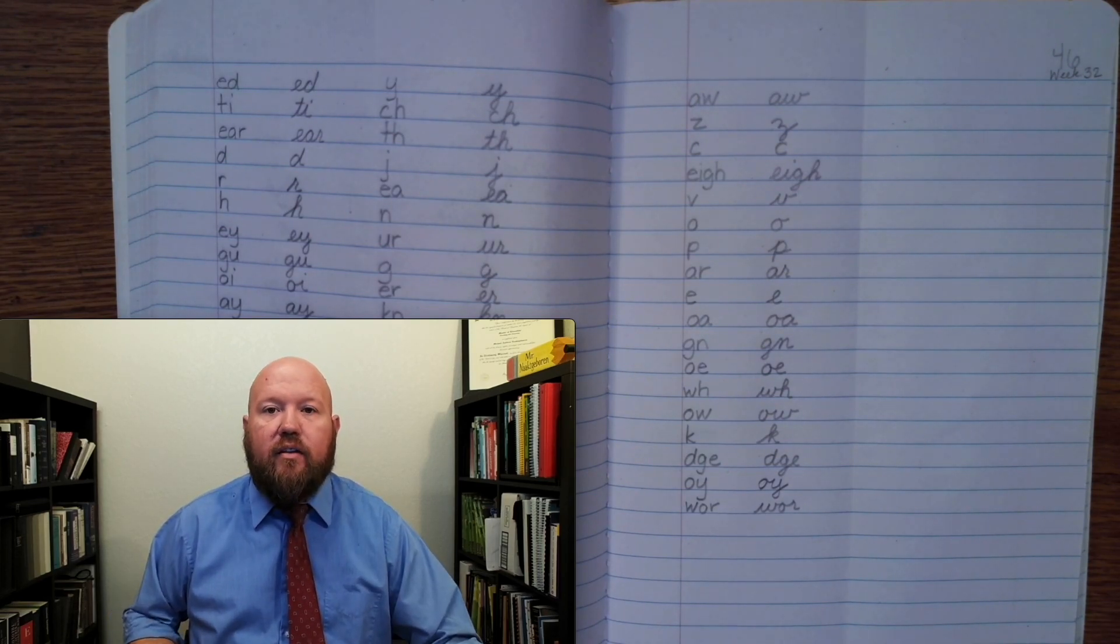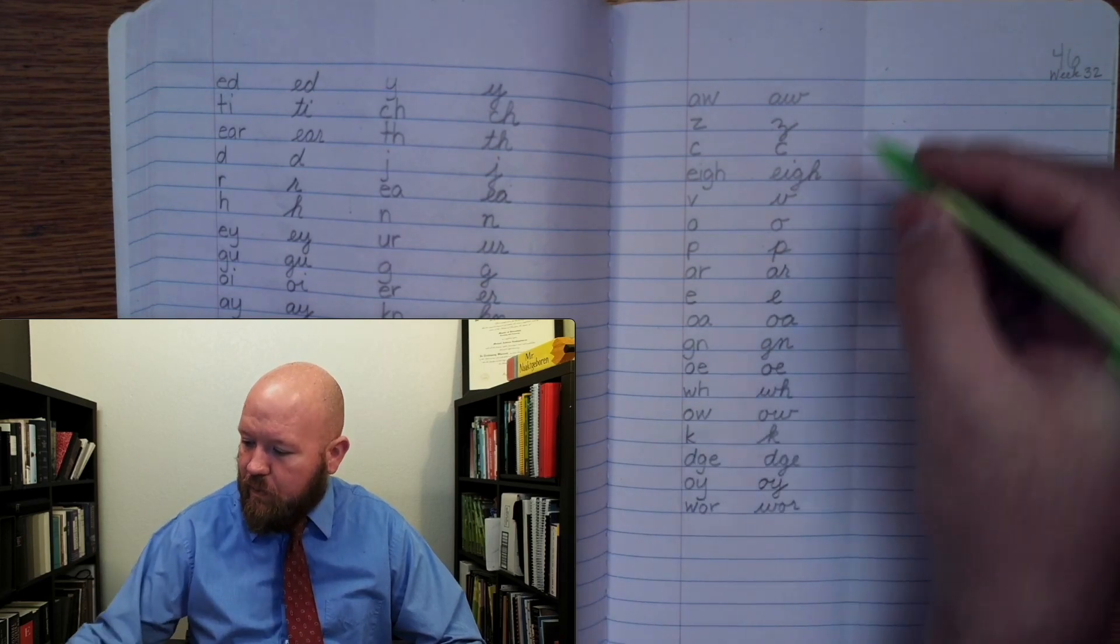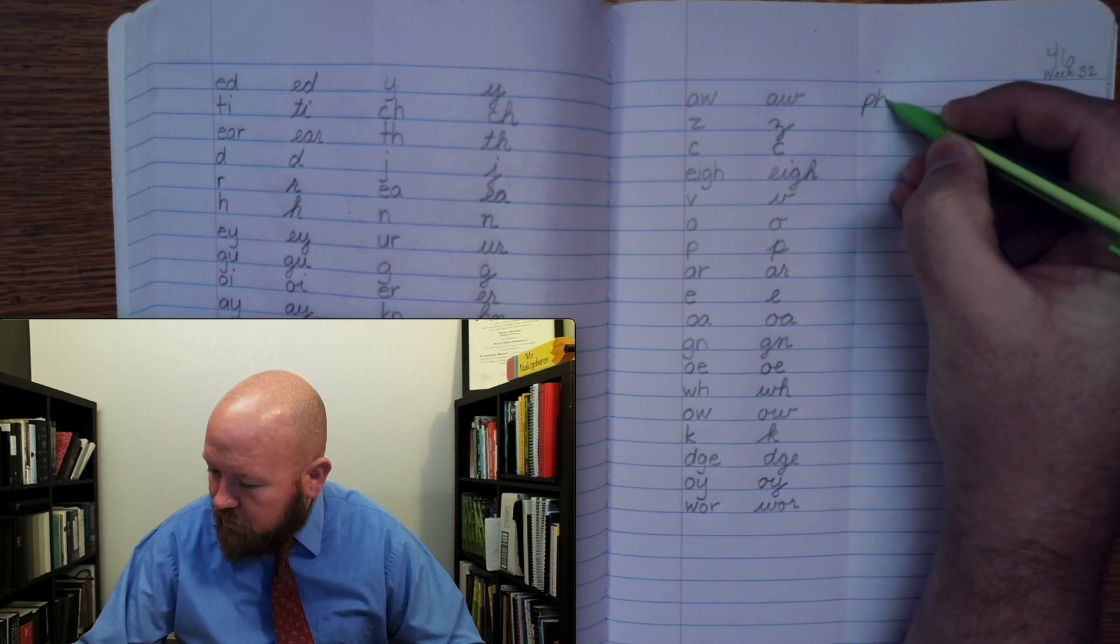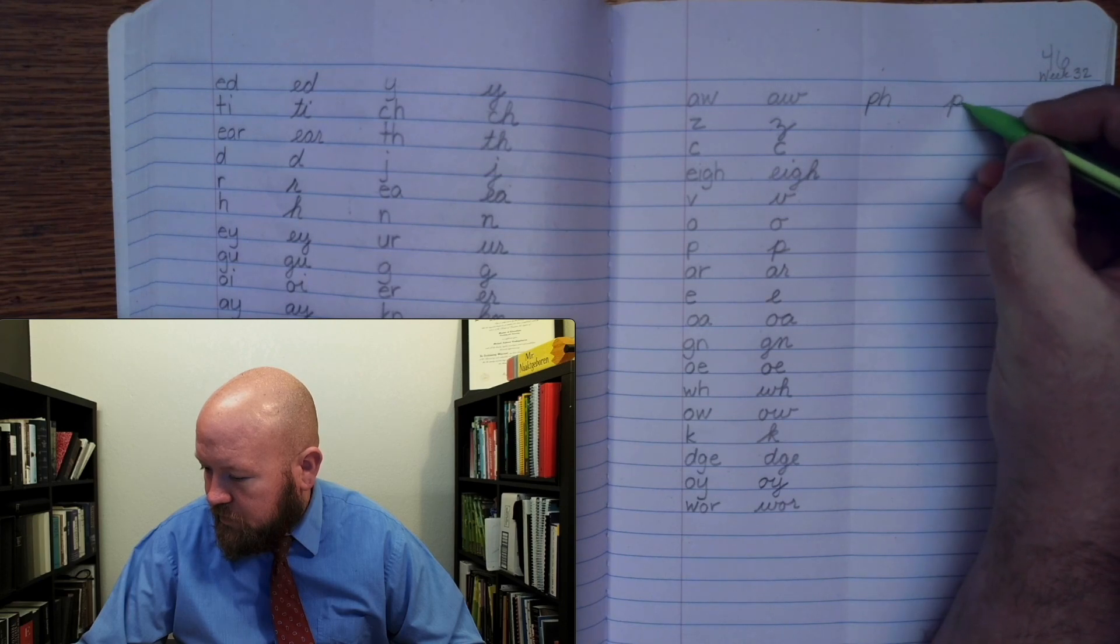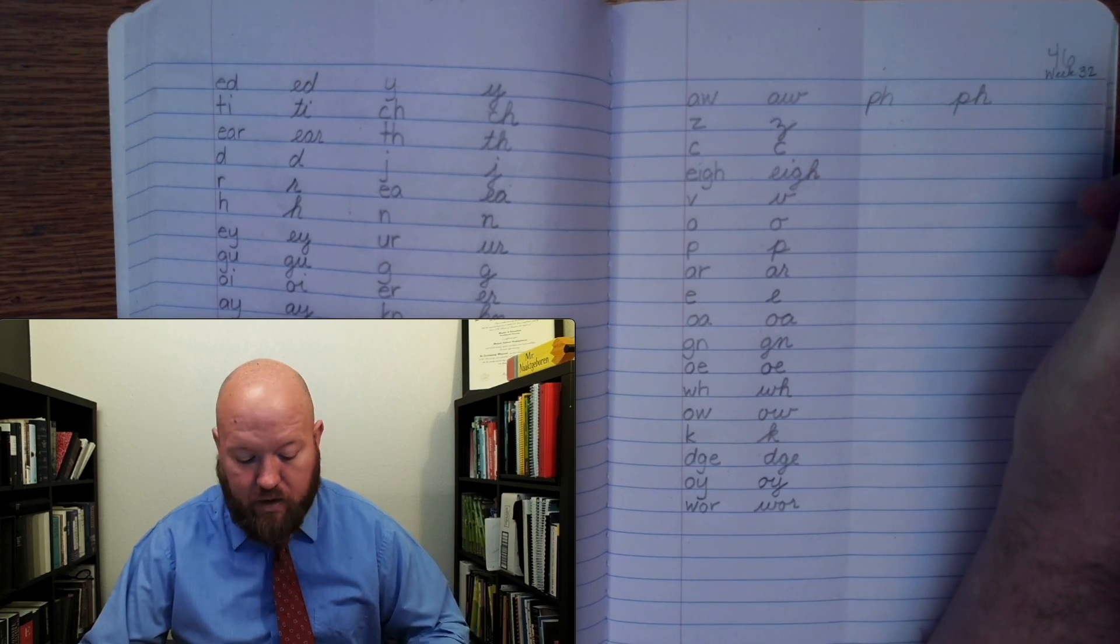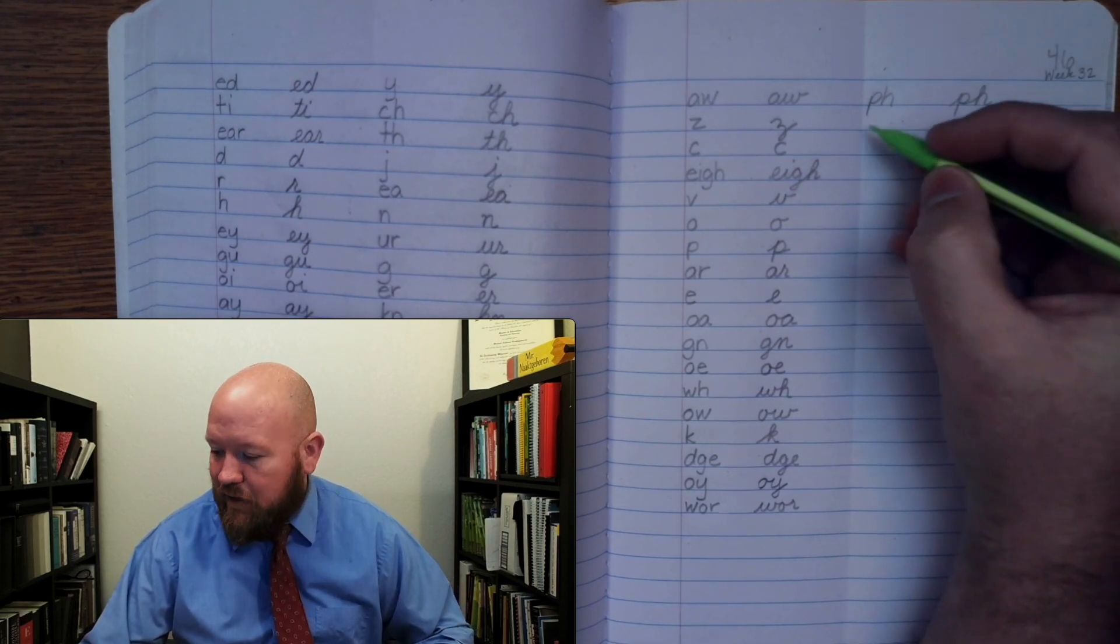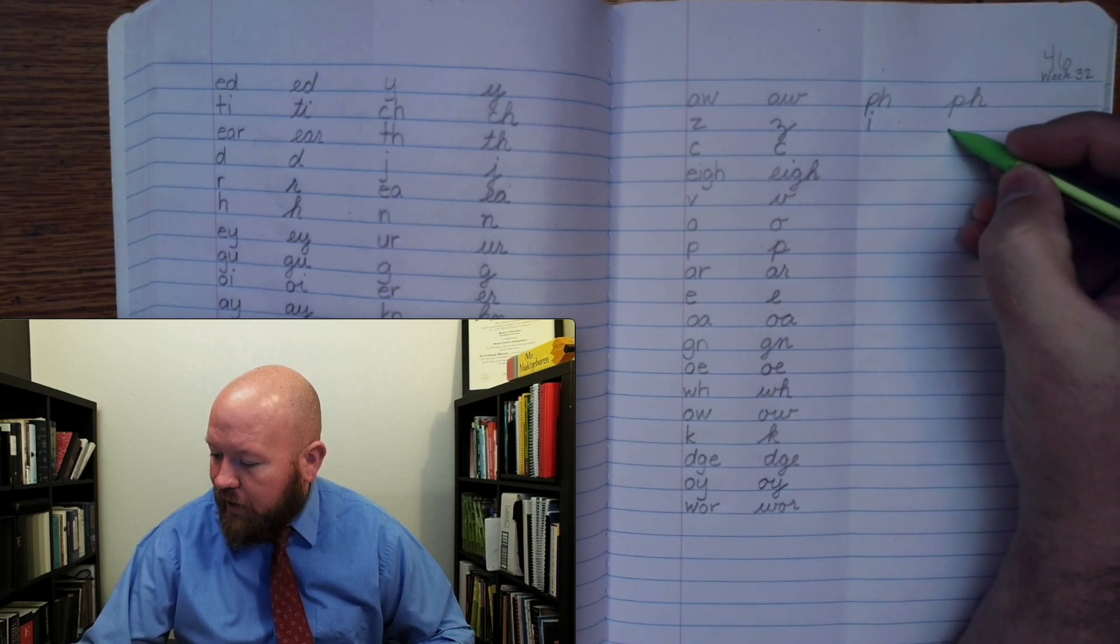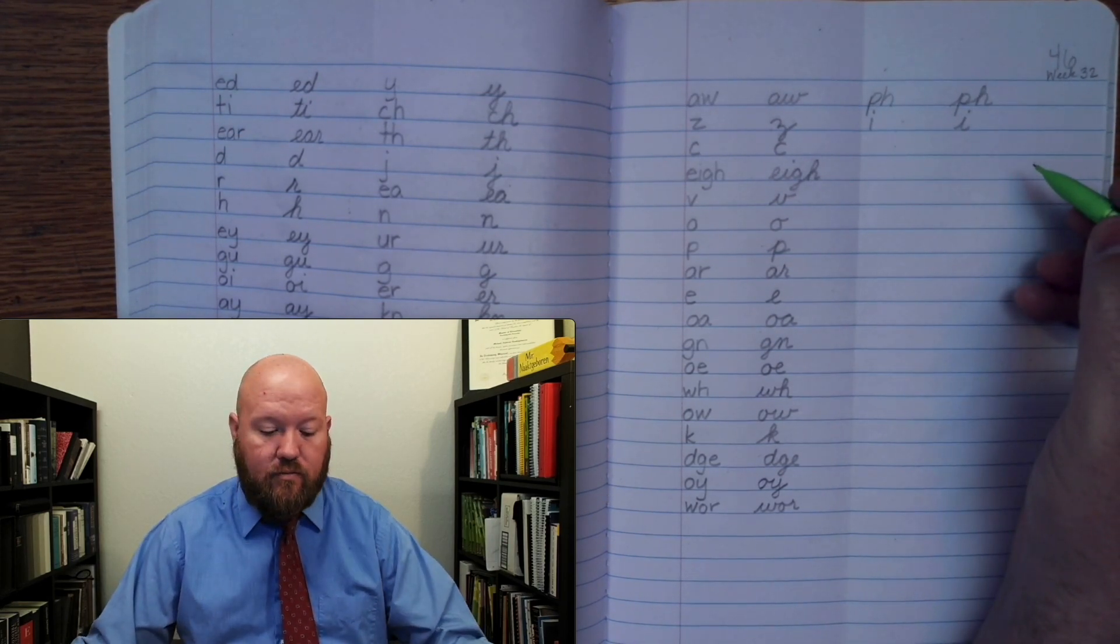First one. F, two letters. F, two letters. Next one. I, I. I, I.